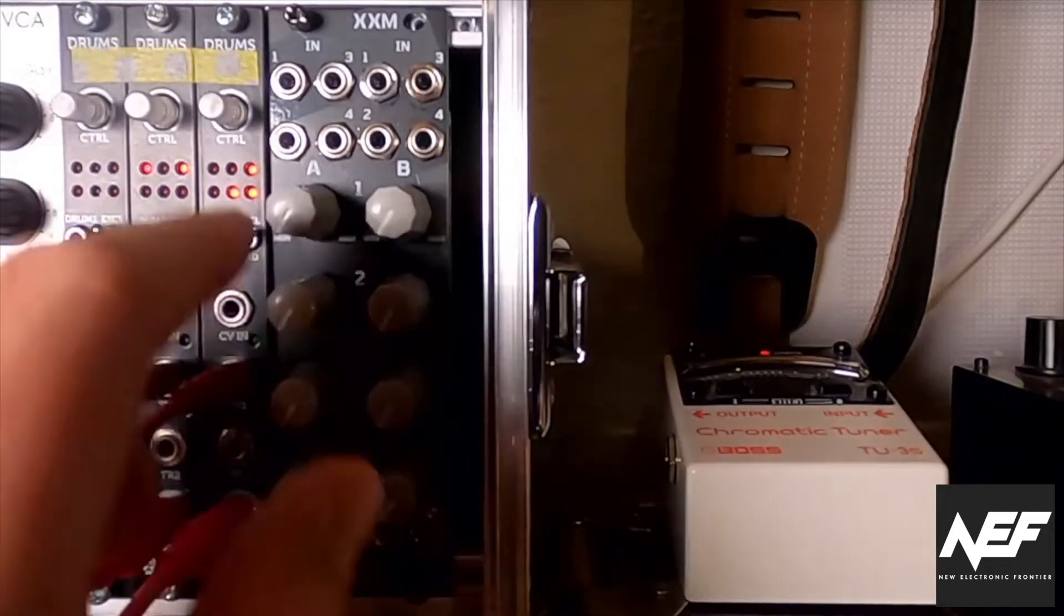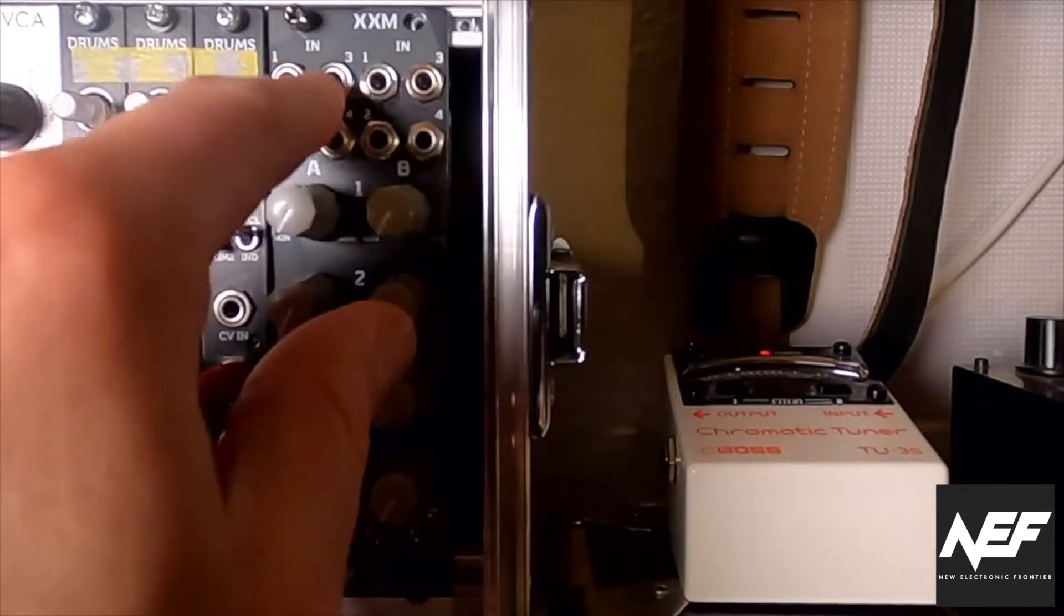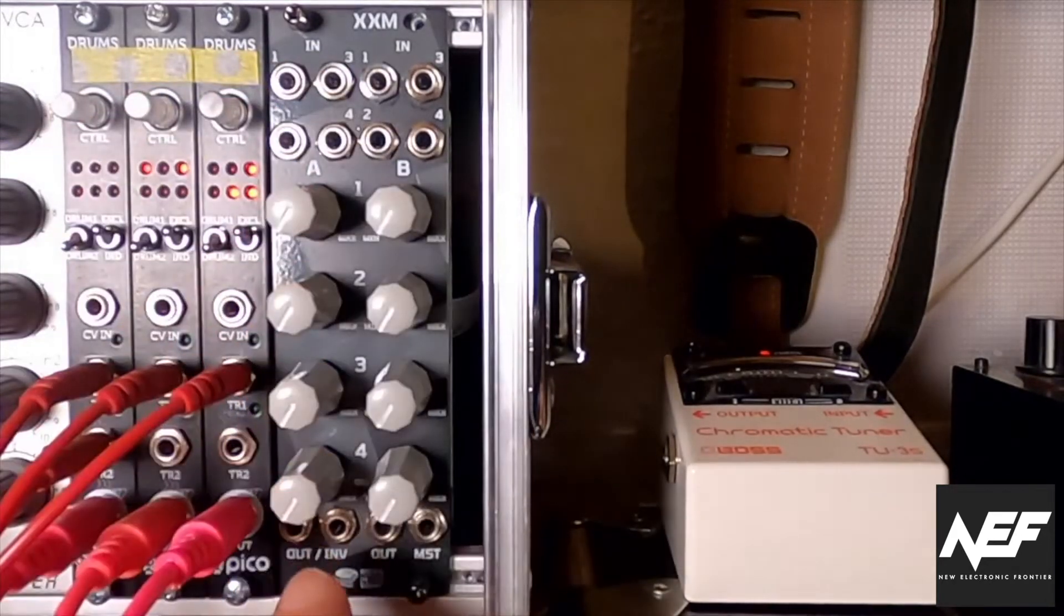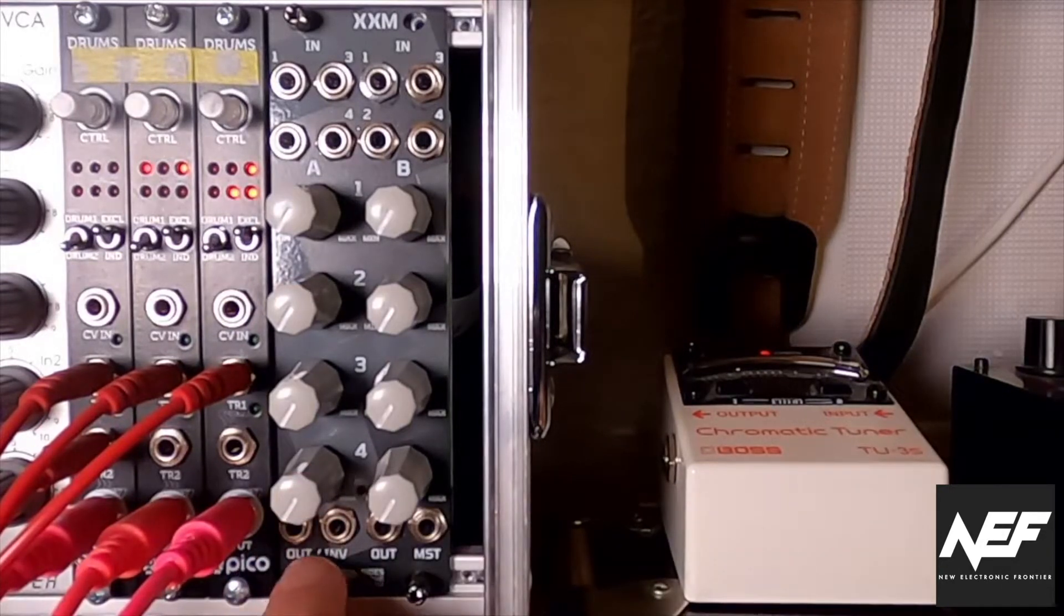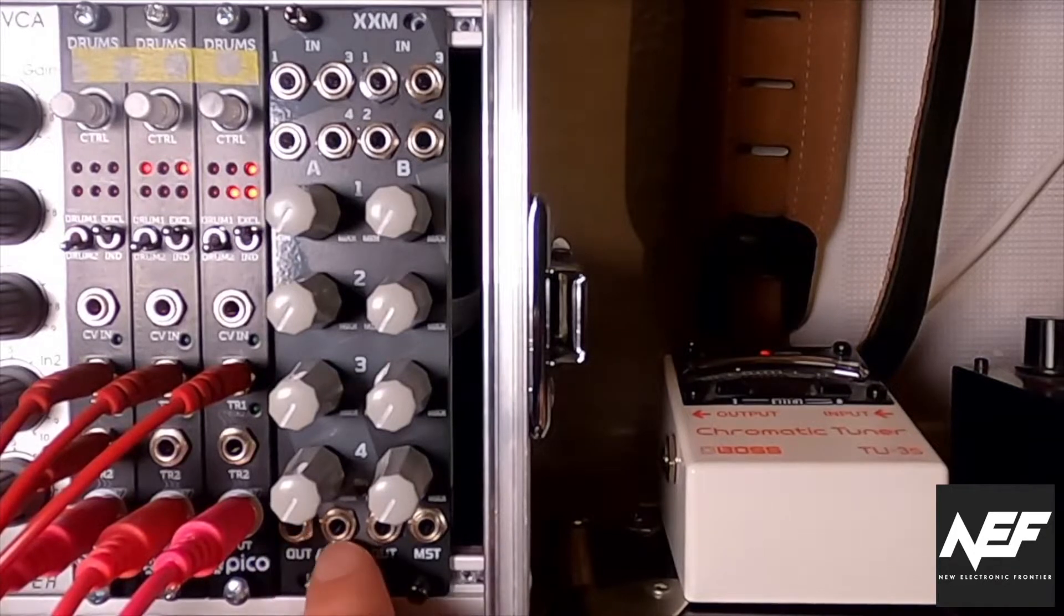To give you the layout again, you have channels A and B, all like sections A and B. You have inputs one, two, three, four and the knobs for controlling the signal amount.